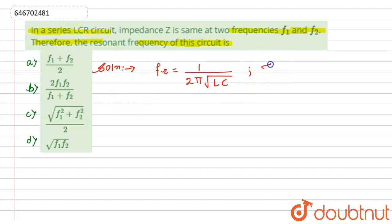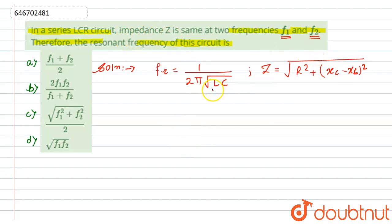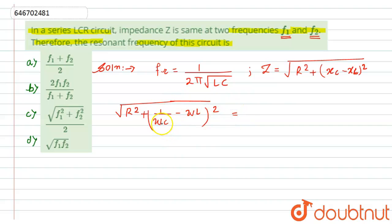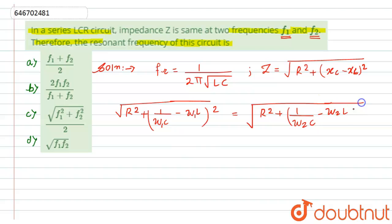For a series circuit, impedance is given by Z = √(R² + (Xc − Xl)²). Since the impedance Z is the same at both frequencies, we equate: R² + (1/(ω₁c) − ω₁l)² = R² + (1/(ω₂c) − ω₂l)², where ω₁ corresponds to f1 and ω₂ corresponds to f2.